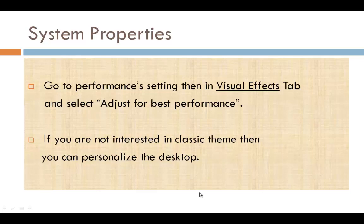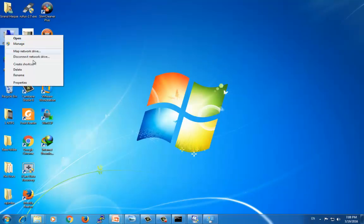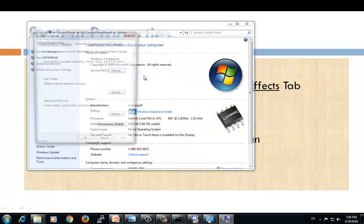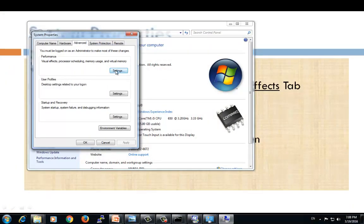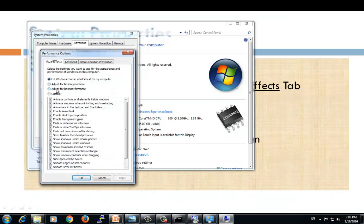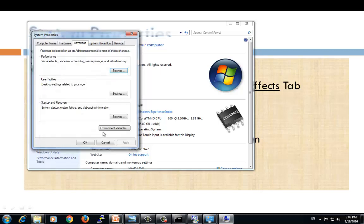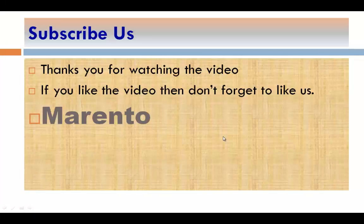We can also go to the Advanced section of My Computer, then System Settings, and under Performance adjust the Visual Effects settings as you wish. This completes all the steps to improve the performance of your computer. If you like this video, please subscribe and like. Thank you from Marento.